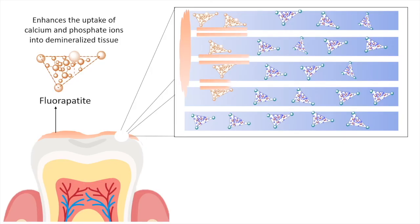This fluorapatite is more resistant to dissolution by the organic acids. It further enhances the uptake of calcium and phosphate ions into the demineralized tissue. By preventing further disintegration of the enamel rods, it prevents demineralization, and by enhancing the uptake of calcium and phosphate ions, it promotes remineralization.